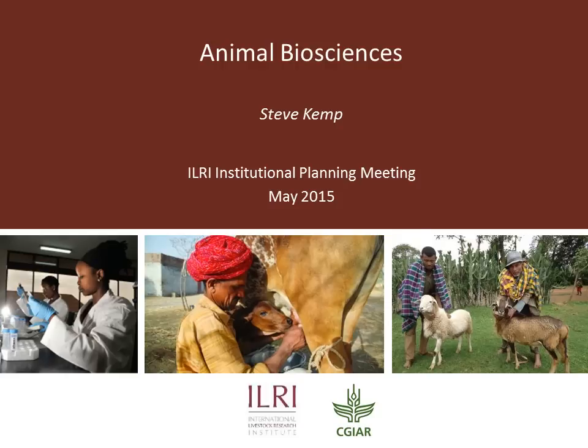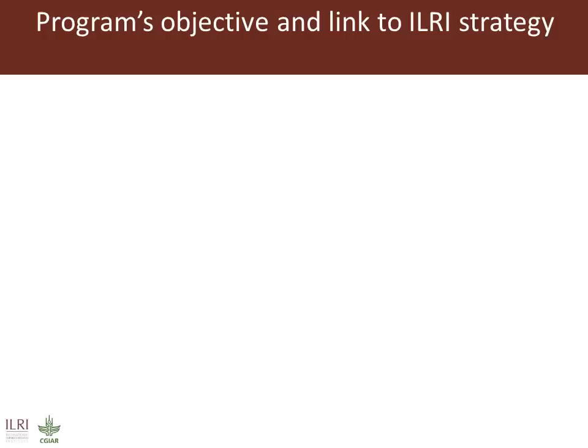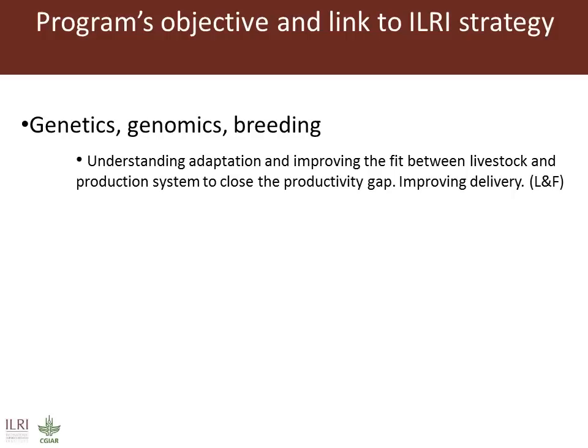Hello, here is a brief and necessarily somewhat arbitrary overview of animal biosciences. The animal biosciences program divides into two broad categories. One we might call genetics, genomics and breeding, which is aimed at understanding adaptation — what is adaptation and how can we understand it in order to improve the fit between livestock and production systems in order to close that productivity gap.